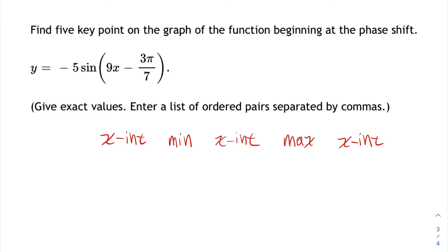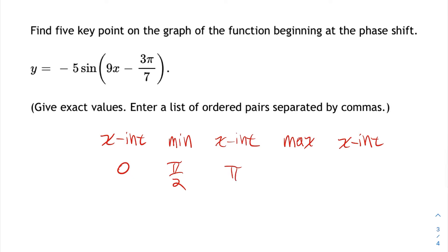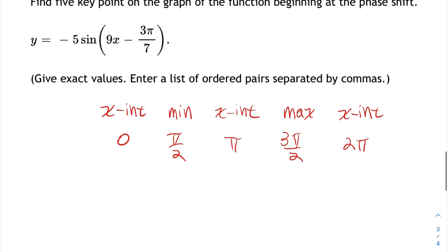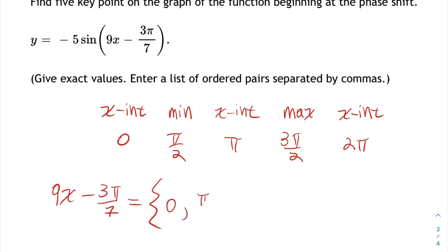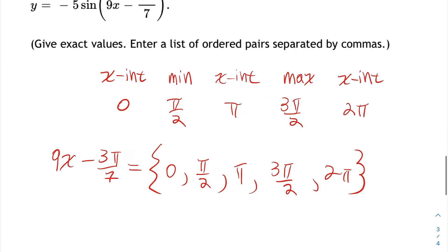Where these things occur: the first x-intercept is at 0, then at pi over 2 is the minimum, pi is the next x-intercept, 3pi over 2 is the maximum, and the last x-intercept is at 2pi. So all I need to figure out is what makes 9x minus 3pi over 7 equal to this set of numbers: 0, pi over 2, pi, 3pi over 2, and 2pi. I have to solve these 5 equations simultaneously.